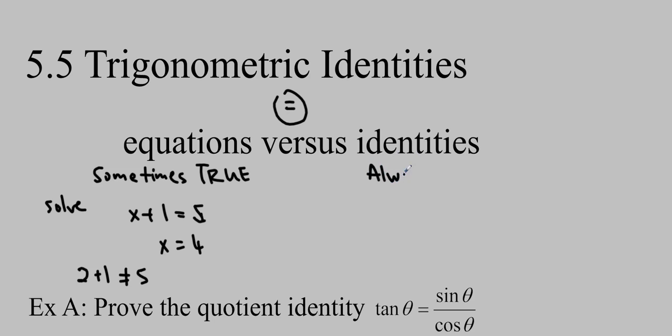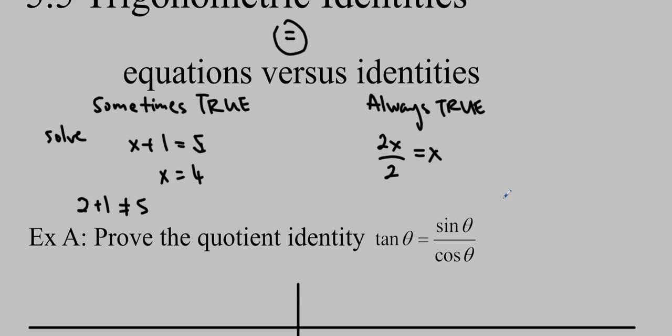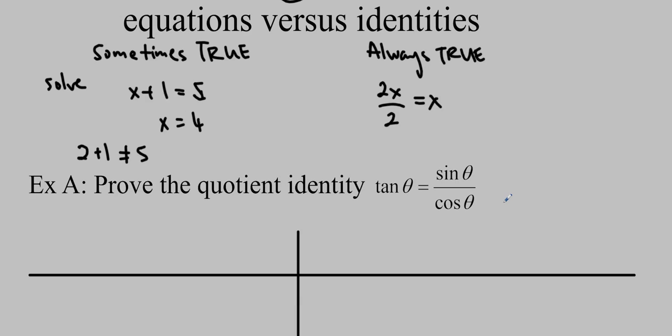An identity is always true. We might get something like 2x over 2 equals x. No matter what we put in for x, it will always be true, and we don't have to worry about solving it. We're going to prove some identities right now, and then we're going to be able to use the identities to prove new identities, more complex identities. We're going to start by using definitions. We can always use definitions to prove things, but once we've established some of these, they'll be much easier to use.